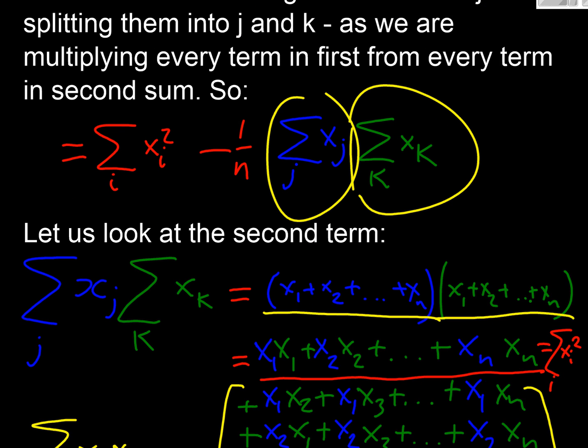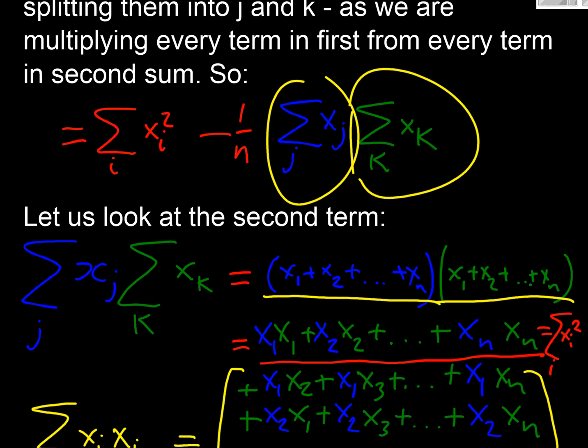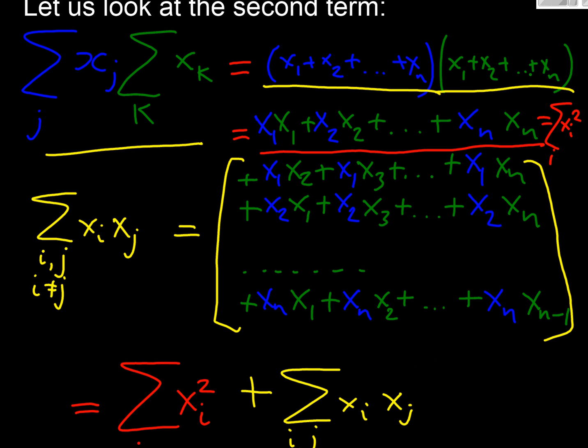And what we can do is look at this second term here, and if we expand these brackets out we get two distinctly separate parts. The first part is when we multiply the x1 in the first bracket by the x1 in the second, and the x2 in the first by the x2 in the second, and finally the xn in the first by the xn in the second.